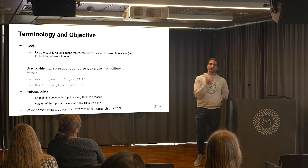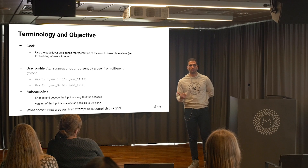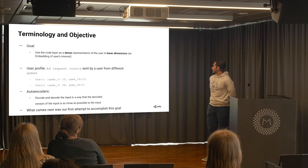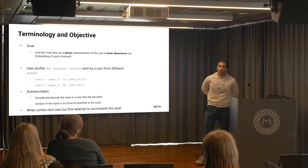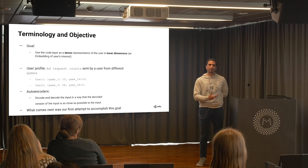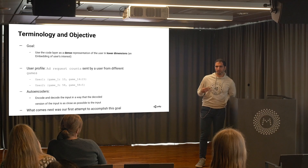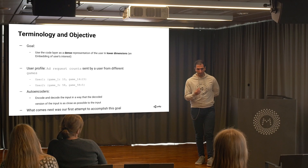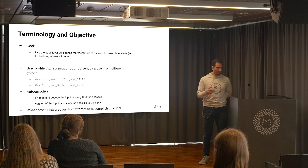The whole user representation is a mapping from project IDs or game IDs to the number of ad requests sent from those games. For example, user 1 has played game 1 with 10 ad requests and game 14 with 15 ad requests, while user 2 has played game 3 with 58 ad requests and game 58 with 5. But this definition makes the user representation very sparse — we have thousands of games, but an average user plays only 4 or 5, so most of the tensor is zeros.